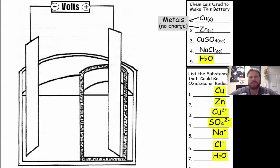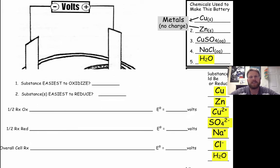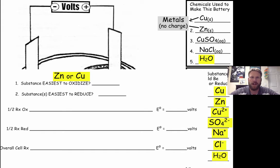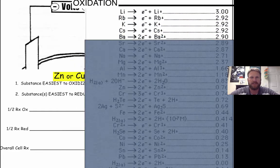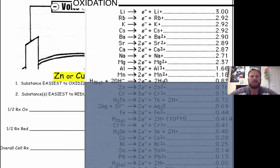Water rounds out our list of substances that could be oxidized or reduced. Now we're going to determine the substances that are oxidized and reduced using our redox table. Remember, oxidation is losing electrons, and a characteristic of a metal is to lose electrons. So we know either zinc or copper is going to be oxidized — one of the metals will be oxidized, so we just have to find the metal that's highest on the oxidation table.